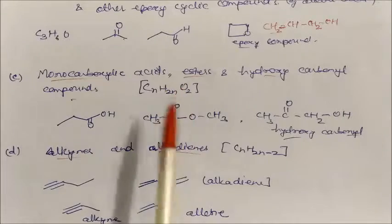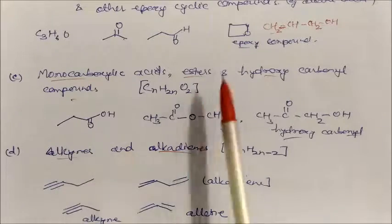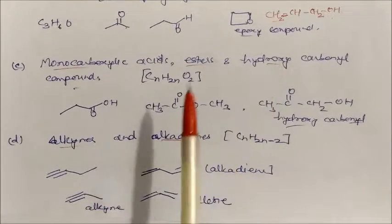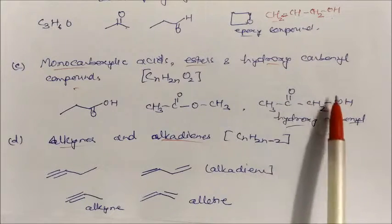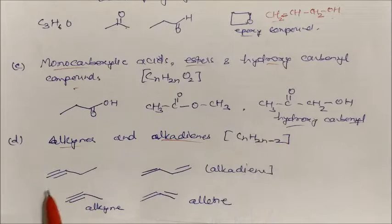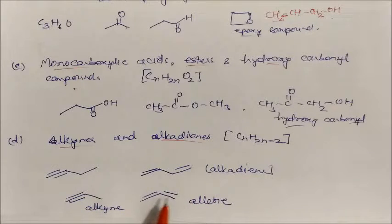Next, monocarboxylic acids, esters, and hydroxycarbonyl compounds all have formula CnH2nO2 (alkene + two oxygens). For example, a carboxylic acid, an ester, and a hydroxycarbonyl compound (one ketone group plus one alcohol group) are all functional isomers. Additionally, alkynes and alkadienes are functional isomers — a triple bond can be represented as two double bonds, giving diene structures. These are different types of functional isomers.